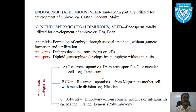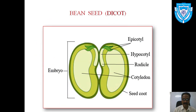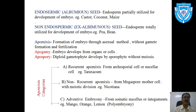When the endosperm is not fully utilized for the development of the embryo — only partially utilized — the endosperm still exists at seed formation. That seed is called an endospermic or albuminous seed, where the seed consists of a large portion of endosperm. Examples are castor, coconut, and maize.